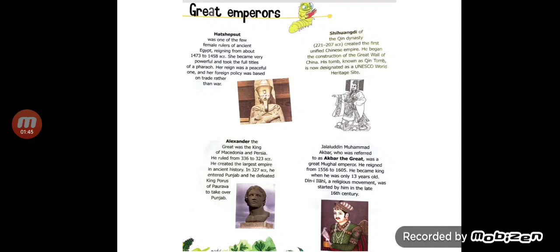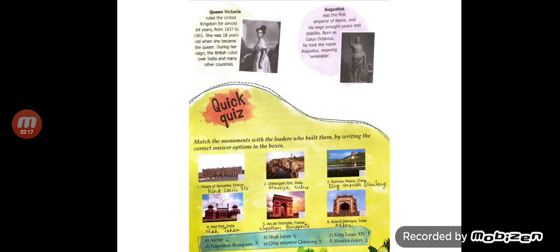Jalaluddin Muhammad Akbar, who was referred to as Akbar the Great, was a great Mughal Emperor. He reigned from 1556 to 1605 and became king when he was only 13 years old. Din Ilahi, a religious movement, was started by him in the late 16th century.